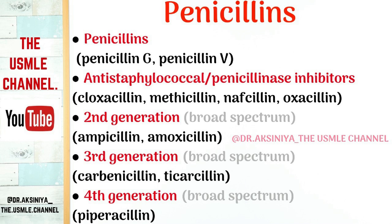Second, third, and fourth generation penicillins are broad-spectrum. The second generation is used mainly for E. coli, Salmonella, Shigella, and H. influenzae infections. Third and fourth generations are also known as anti-pseudomonal, as they are very active against Pseudomonas infections. The last from our bactericidal list is vancomycin.